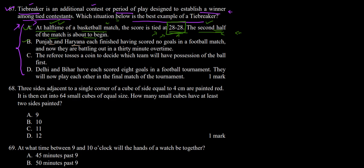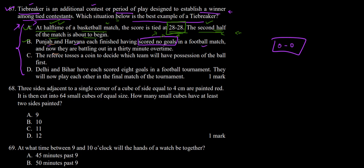In option B, Punjab and Haryana each finished having scored no goals in a football match, and now they are battling out in a 30-minute overtime. Overtime here is extra allotted time. The cause for this overtime is that both teams scored 0-0. This 30-minute overtime can be called a tiebreaker, which will break the tie and determine which team wins the match. Option B seems to be a good example of a tiebreaker.